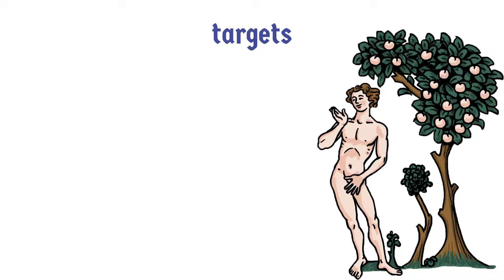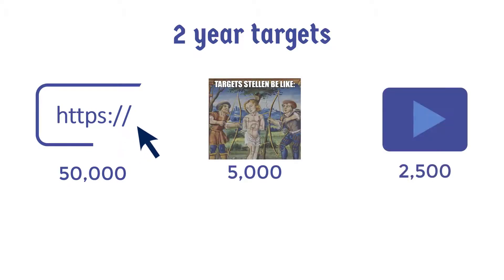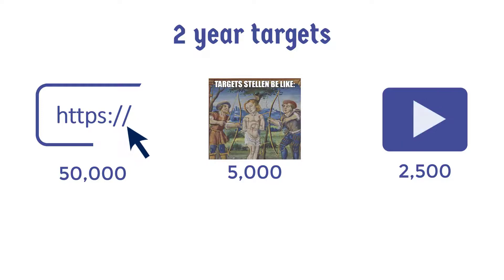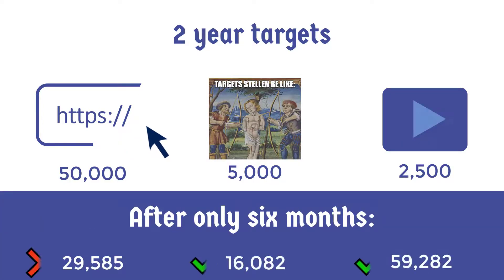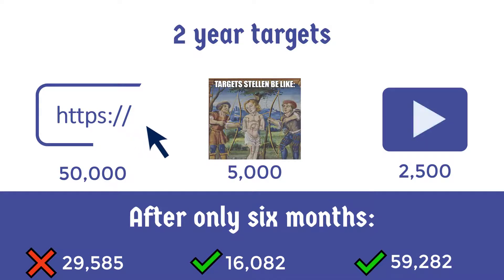Now, over to our targets. We promised the funder that within two years we would have 50,000 visitors to our website, 5,000 memes made, and 2,500 videos viewed. But after only six months, almost 30,000 people had visited our website, 16,000 memes were made — three times more than our two-year target — and a whopping almost 60,000 videos were viewed. The explanation videos turned out to be extremely popular.